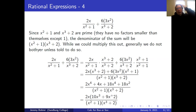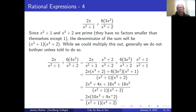So we have 2x over (x²+1) plus 3x² over (x³+2), which equals 2x over (x²+1) times (x³+2)/(x³+2) plus 3x² over (x³+2) times (x²+1)/(x²+1), giving us [2x(x³+2) + 3x²(x²+1)] all over (x²+1)(x³+2), which is (2x⁴ + 4x + 18x⁴ + 18x²) over (x²+1)(x³+2). That simplifies — and that should be 9x² — giving 2x(10x³ + 9x² + 2).